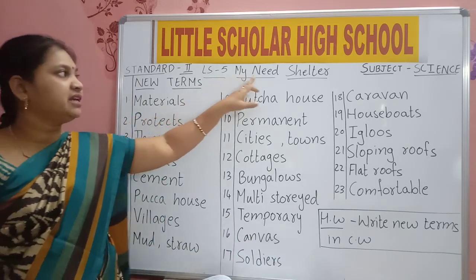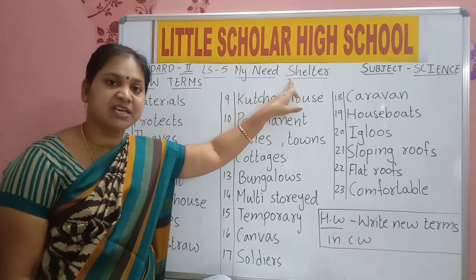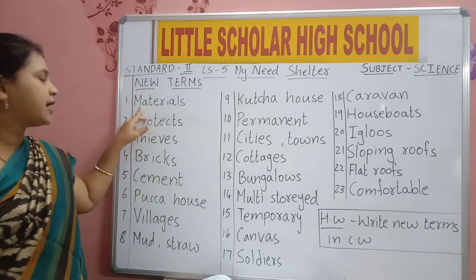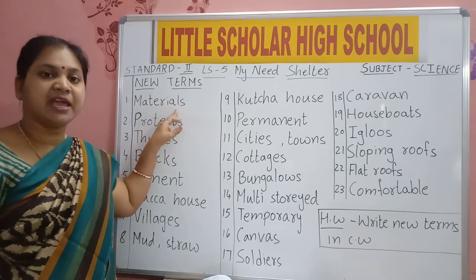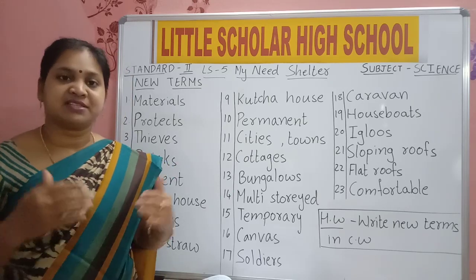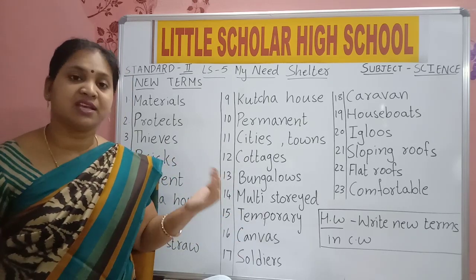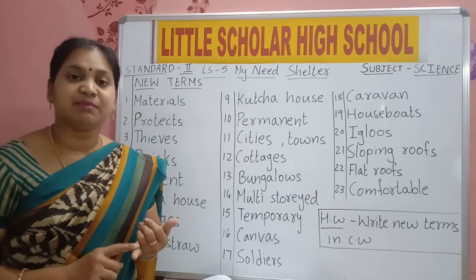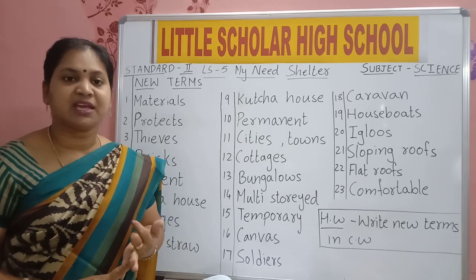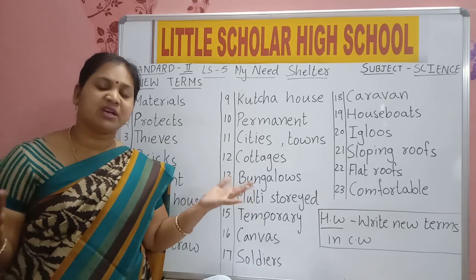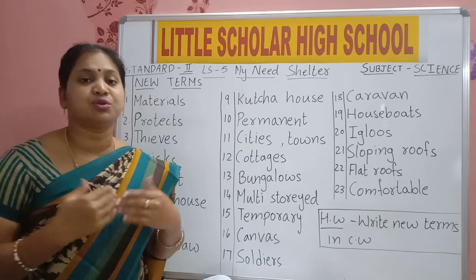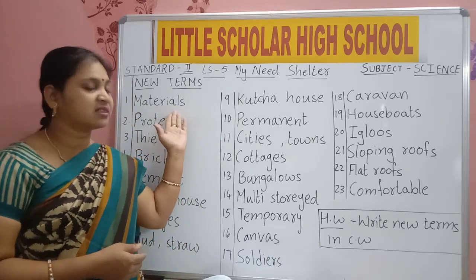First term: Shelter — S-H-E-L-T-E-R. What is shelter? House is our shelter. Second term: Materials — M-A-T-E-R-I-A-L-S. Material means things. For constructing a house, what materials are used? Bricks are used, cement is used, sand is used, steel is used. For making a house, we need all these. Without bricks or steel rods, you cannot build a house. Material means the things which are needed.